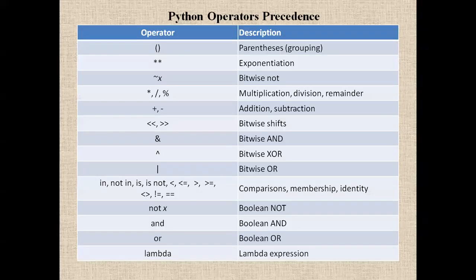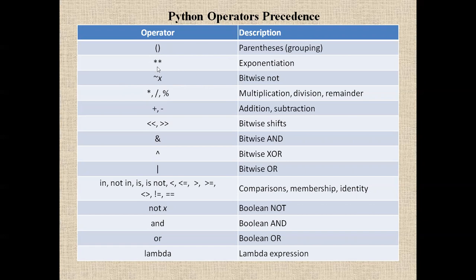The next topic is Python operator precedence. In expressions, operators are used and the system executes them based on their precedence. If parentheses are given, they will be executed first — any operands and operators within parentheses are evaluated first. After that, exponentiation is executed. If only exponentiation is present with no parentheses, exponentiation gets first priority.